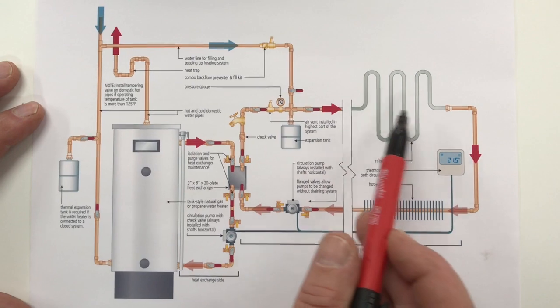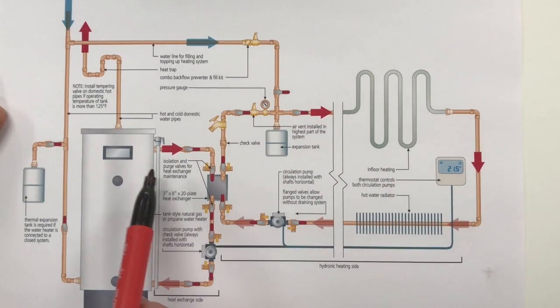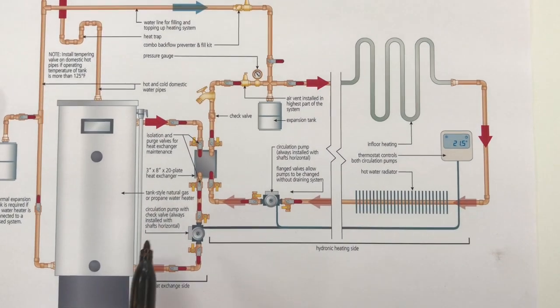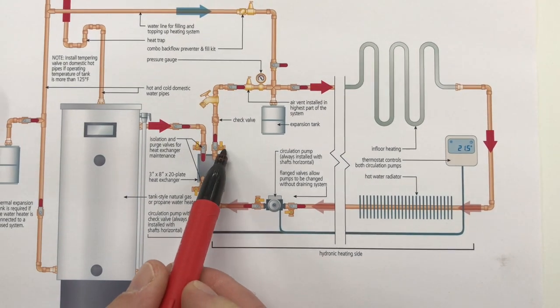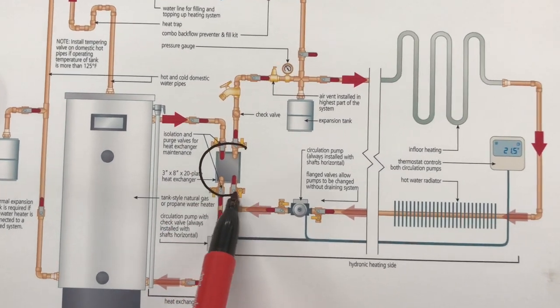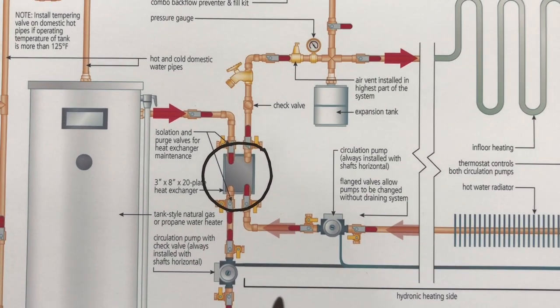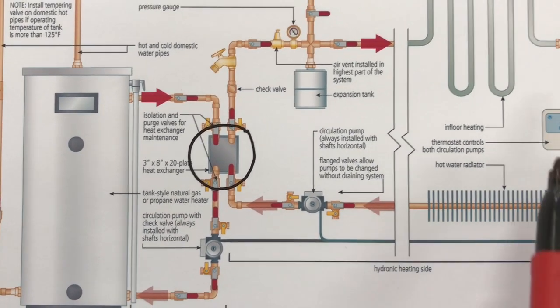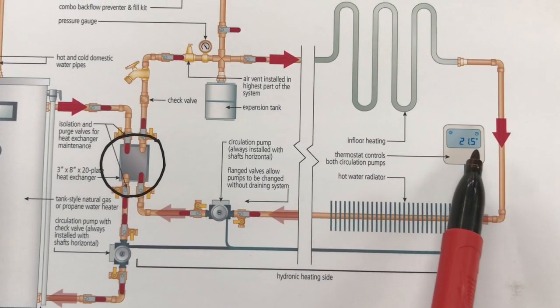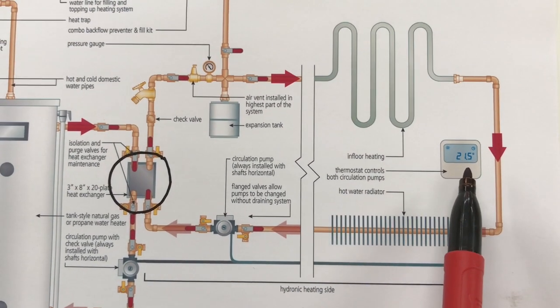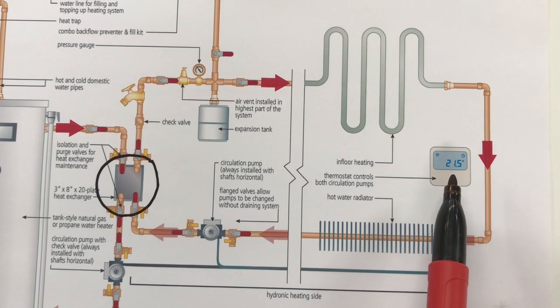The hydronic heating water never mixes with the water in the tank and the way that happens is through this heat exchanger here. So what happens when the thermostat calls for heat, the thermostat triggers two pumps, two circulator pumps instead of one.